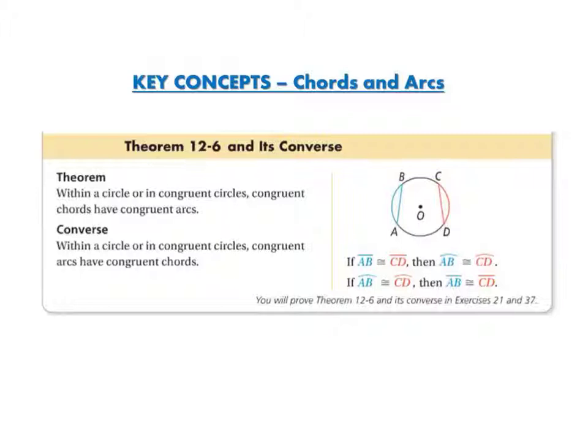The converse says within a circle or in congruent circles, if you have congruent arcs, then you have congruent chords. So if arc AB is congruent to arc CD, then chord AB is congruent to chord CD.